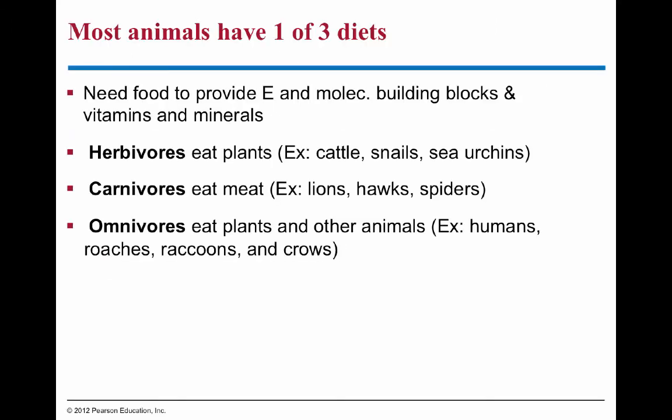Let's first look at digestion. Organisms like animals need to eat — remember they're ingesters — in order to gain molecules for energy, meaning you can extract electrons from them to do cellular respiration to make ATP. They also need molecules to build their cells, like enzymes which are proteins, requiring building blocks like amino acids from eating.